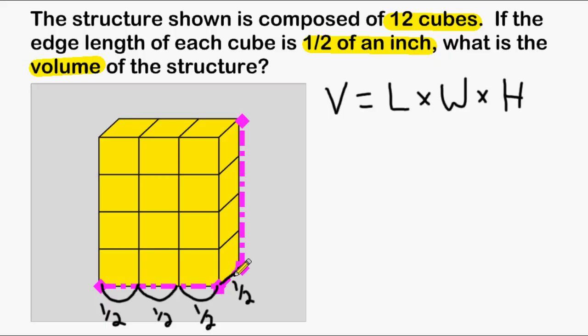And for the height, from here to here is one half, and then two halves, and then three halves, and then four halves. So for the height, we can substitute this h with four halves.